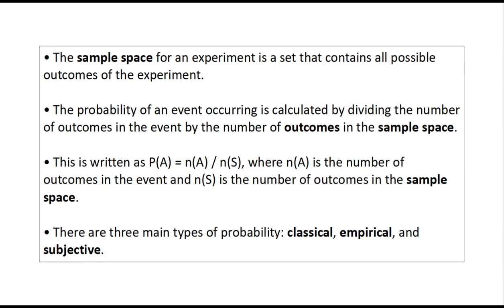The probability of an event occurring is calculated by dividing the number of outcomes in the event by the number of outcomes in the sample space. There are three main types of probability: classical, empirical, and subjective.